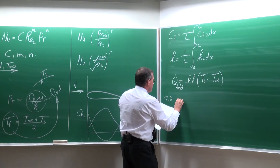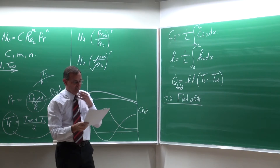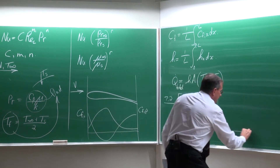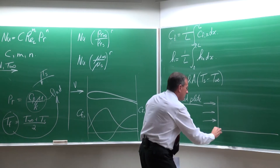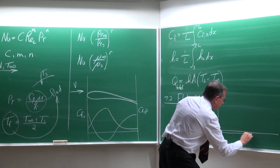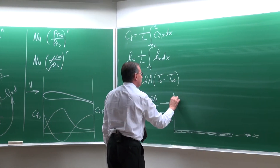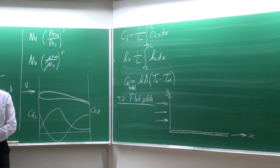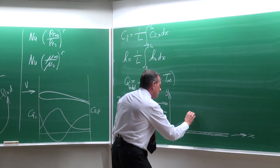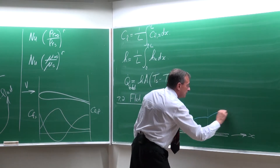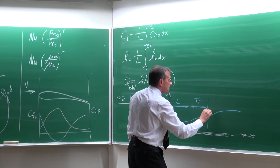Paragraph 7.2 is specifically about the flat plate. For the flat plate — already done in fluid mechanics — if that is the flat plate with flow over it, x is measured along the plate and y perpendicular to it. The velocity boundary layer develops with a laminar part, a transition part, and a turbulent part.